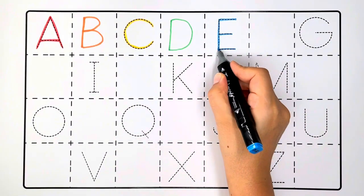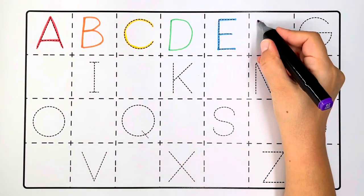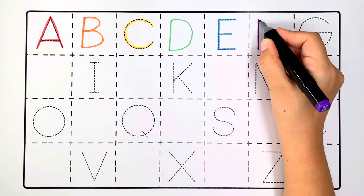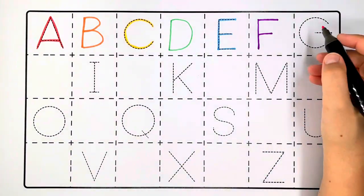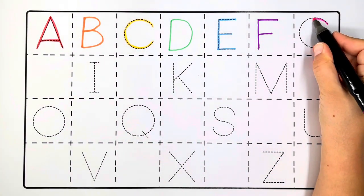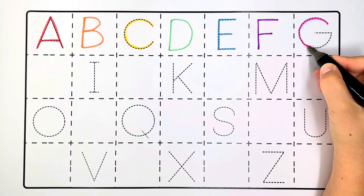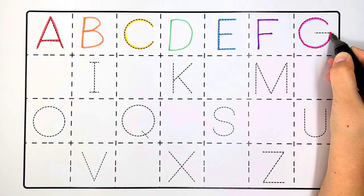E is for elephant. F, F is for frog. G, G is for glasses.